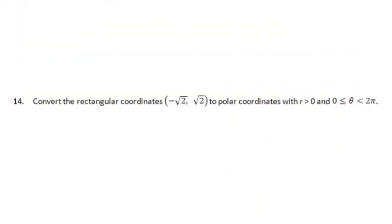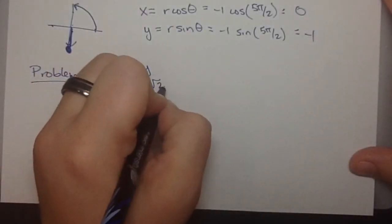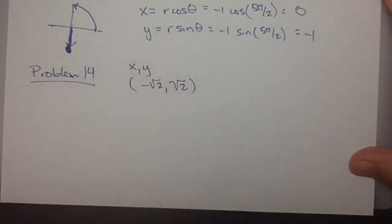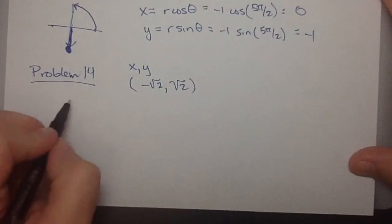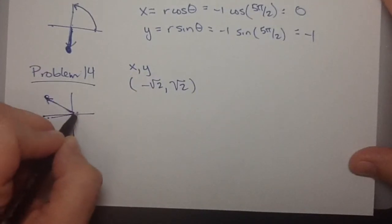So in problem 14, we're given a pair, x, y, negative root 2, root 2. So again, the first thing we're going to do is draw a picture. So x is negative square root of 2, and y is positive square root of 2. So we're here. We're in the second quadrant.